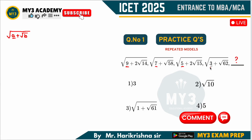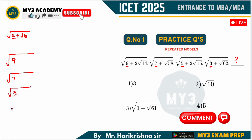The values 9, 7, 5, 3 — the next odd number is going to be 1. So the answer should start with root over 9, root over 7, root over 5, root over 3. That means the next term will start with root over 1. That is very clear.